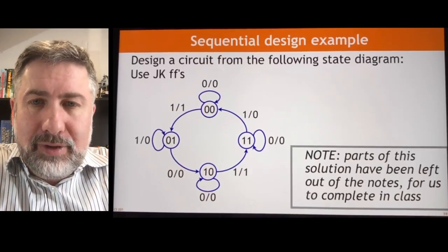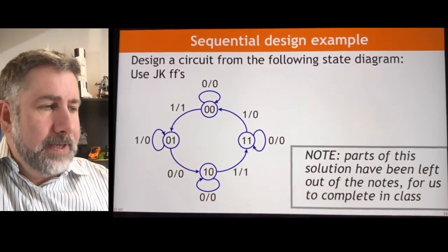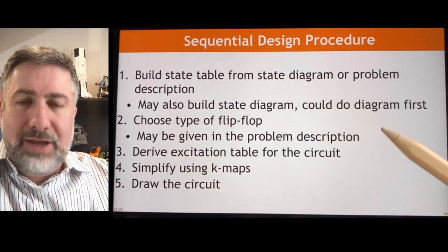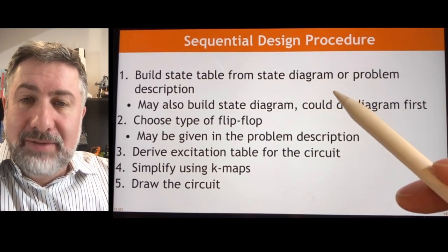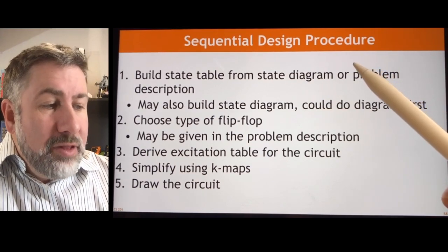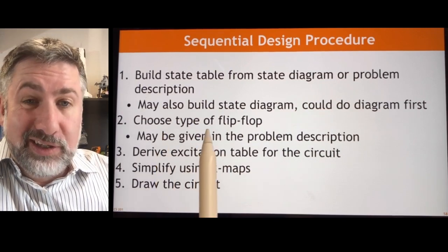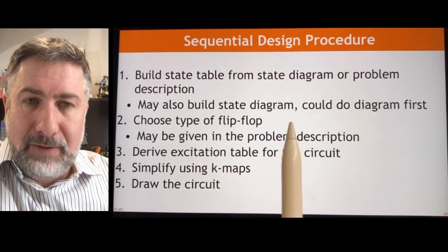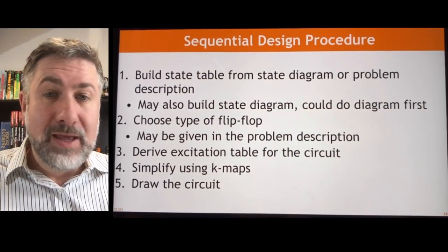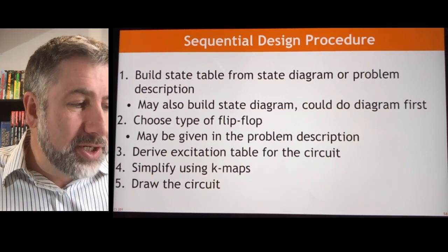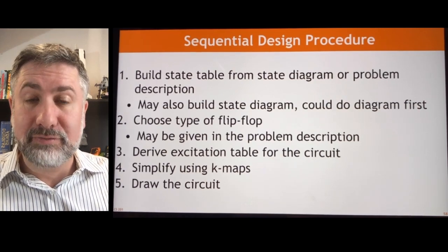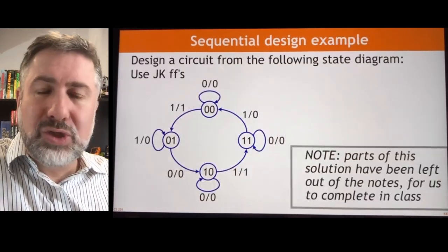I'm going to give you an example of how this process works. The design procedure as given in the notes is: first you're going to build a state table — either from a problem description or a state diagram. Then you're going to choose or be instructed on the type of flip-flop, either D or JK. Then you're going to derive the excitation table for the circuit, simplify it using K-maps, and draw the circuit itself. Let's walk through that process using this example.